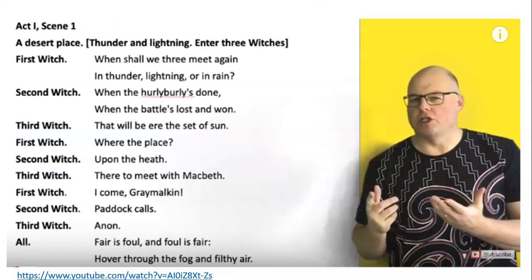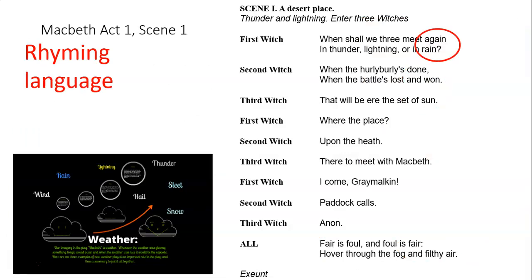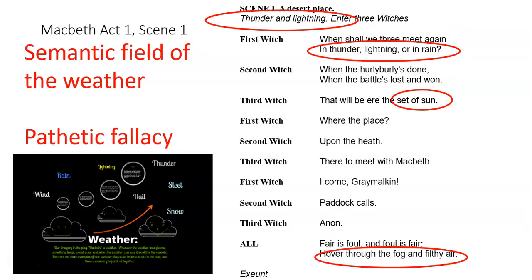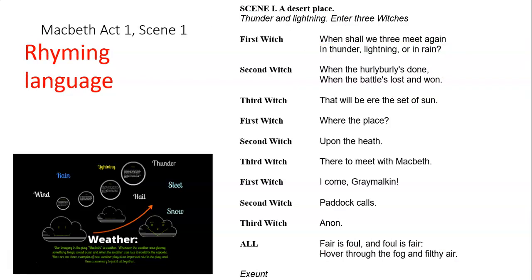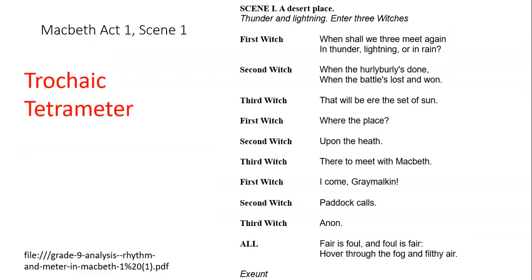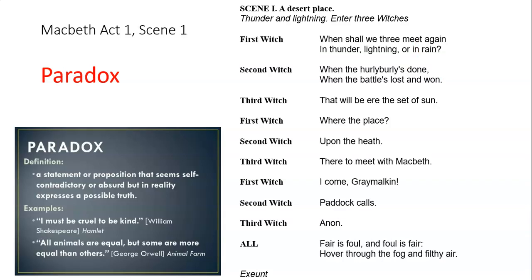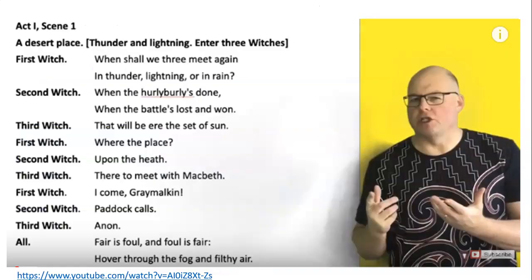You should now have a summary of the scene and notes on the importance of this scene. You should also have notes on: the semantic field of weather and pathetic fallacy, rhyming language, trochaic tetrameter, and the witches' paradox — 'Fair is foul and foul is fair.' For an extension, click the link here — I'll also include it in the email — and watch as Mr. Salas talks about the importance of Act 1 Scene 1 to the rest of the play.